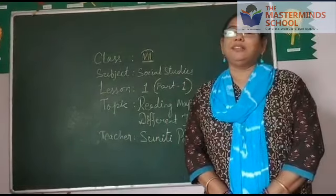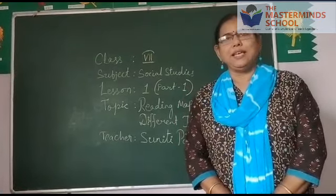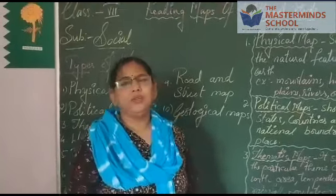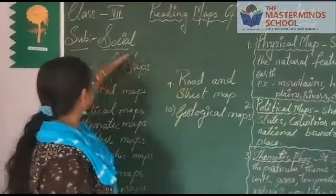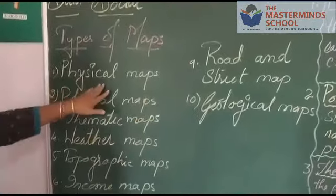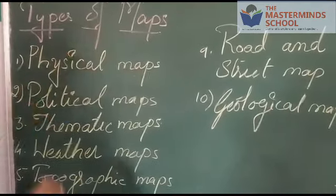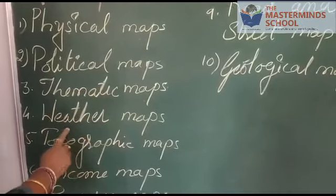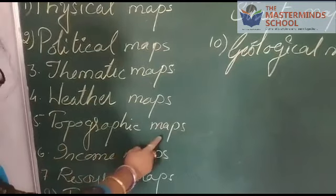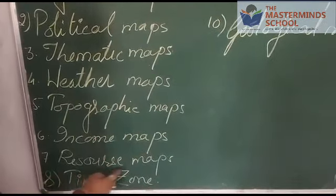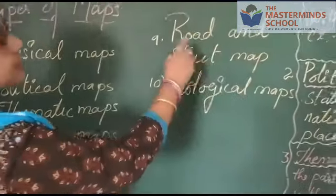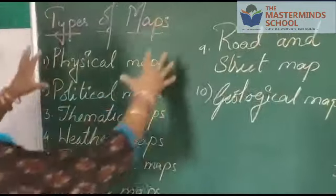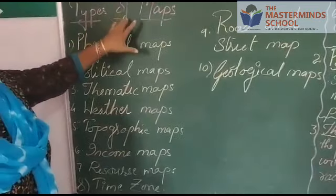Maps are of different types. Today's topic is reading the map of different kinds. Please look at the board: types of maps — physical maps, political maps, thematic maps, weather maps, topographic maps, income maps, resource maps, time zone maps, road and street maps, and geological maps.